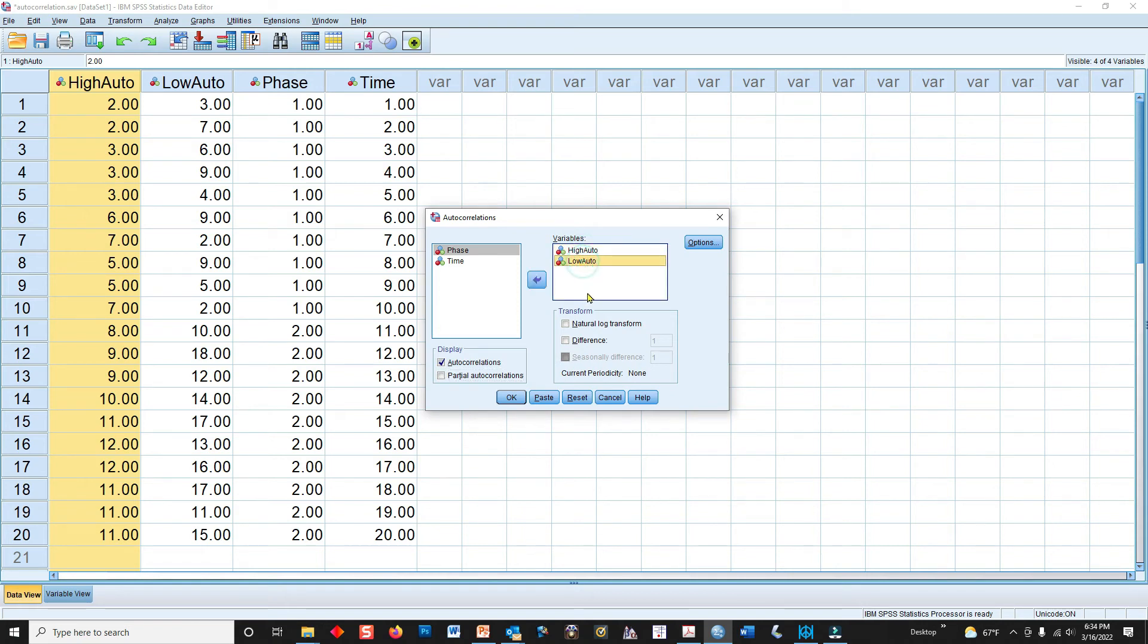I can put both of my variables over here. If I reset it to what it looks like when you first open it up, you see that all the variables are on the left side. Carry whichever variables over that you want to test. And this is not going to give us the Durbin-Watson statistic. It's only going to give us the autocorrelation. And you can see that in options, there is no option here for the Durbin-Watson statistic.